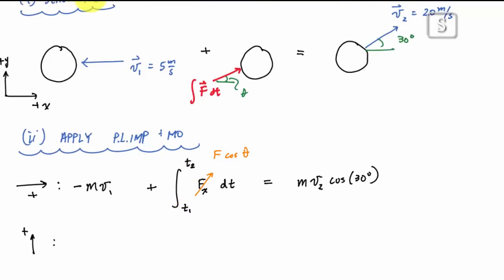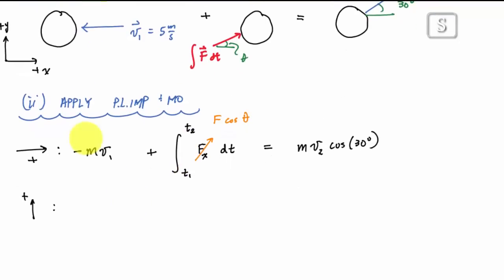Now I write my vertical component equation. My vertical positive - I have no velocity in the vertical direction, so no momentum in the vertical direction here at stage one, if you will. So that's just zero. Plus I would have here t1 to t2, F the y component of this force dt, which would just be F sine theta.